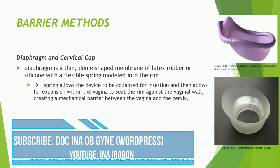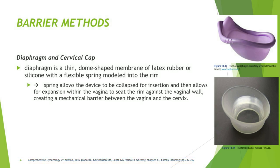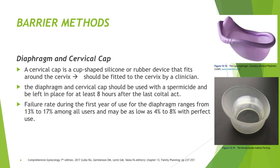The diaphragm is a thin dome-shaped membrane of latex rubber or silicone with a flexible spring molded into the rim, which allows the device to be collapsed for insertion and then expand within the vagina to sit the rim against the vaginal wall, creating a mechanical barrier between the vagina and the cervix. A cervical cap is a cup-shaped silicone or rubber device that fits around the cervix and must be fitted by a clinician. Both the diaphragm and cervical cap should be used with a spermicide and left in place for at least 8 hours after the last coital act. Failure rate during the first year of use for the diaphragm ranges from 13% to 17%, and may be as low as 4% to 8% with perfect use.